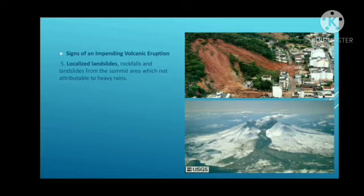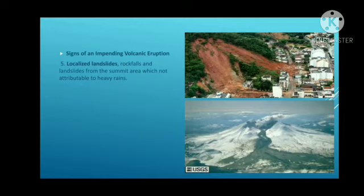Localized landslides, rockfalls, and landslides from the summit area attributed to heavy rains are also warning signs. A landslide is a mass movement of rock fragments, soil, and debris downslope. This can weaken the slopes of the volcano leading to a landslide, or it can cause a volcanic earthquake, which in turn can trigger volcanic landslides.